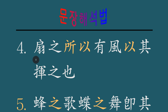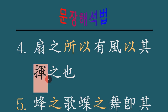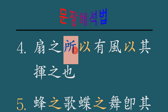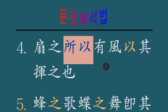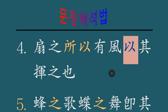4번 보겠습니다. 선지소이유풍은 이기휘지야 세라. 선자는 부채 선자고요. 휘자는 부채다, 휘두르다 라는 뜻이네요. 선지소이유풍은 부채가 바람을 두는 까닭은, 이기휘지야 세라, 그것을 휘두르기 때문이다. 소이자는 까닭이, 때문이, 이렇게 해석합니다.